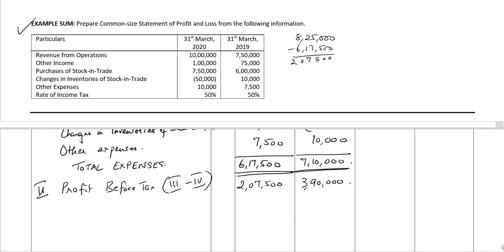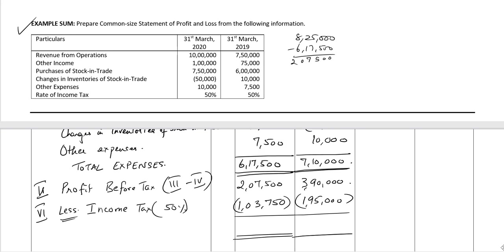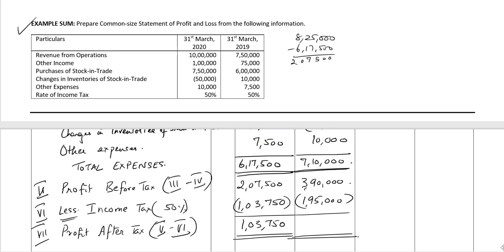We deduct the tax. Roman VI: less income tax at 50% for both years. For 2019 it is ₹1,03,750 and for 2020 it is ₹1,95,000. Roman VII is profit after tax, which equals Roman V minus Roman VI: ₹1,03,750 for 2019 and ₹1,95,000 for 2020.